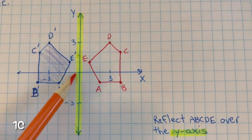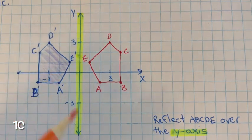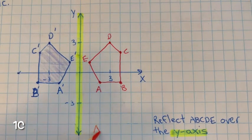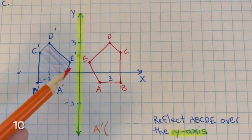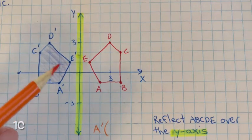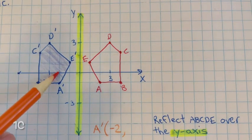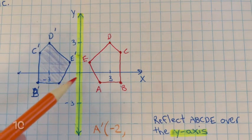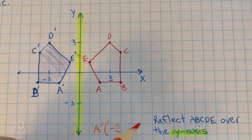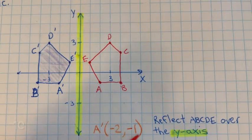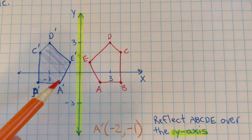Now we need to determine what are the coordinates for a prime. The coordinates for a prime: start at the origin, negative 2 on the x. Then on the y, we're going down on the y-axis, negative 1 on the y. So the coordinates for a prime are negative 2, comma, negative 1.